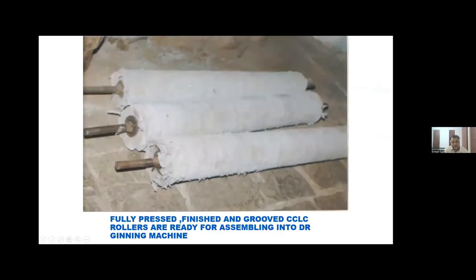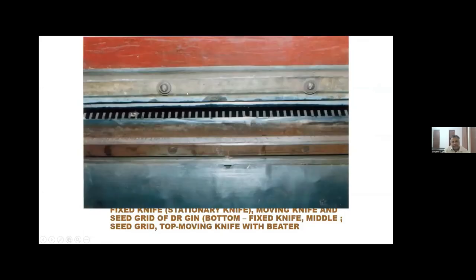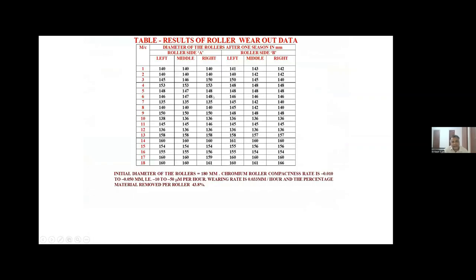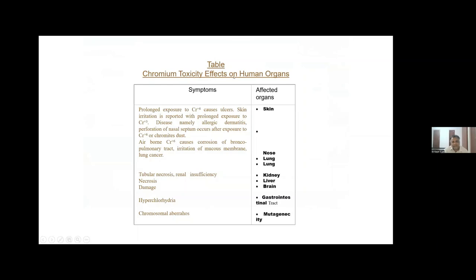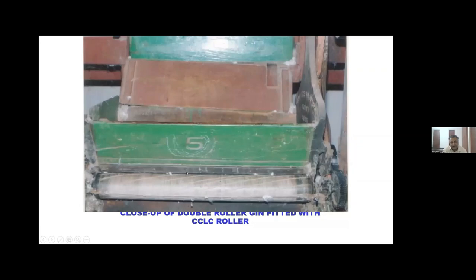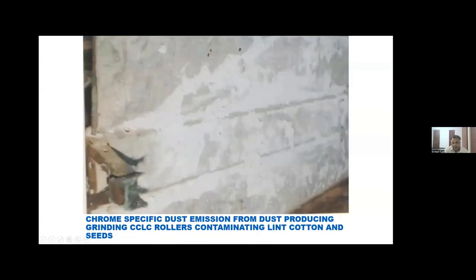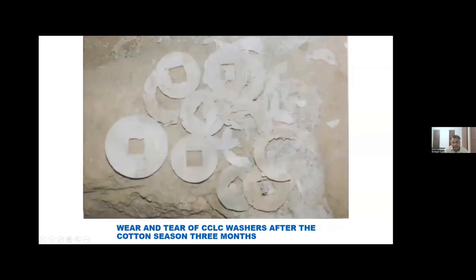These are shafts packed in washers — chrome composite leather crown rollers, the gin rollers used in Indian double roller ginning industries. The grooving done on them is called mode grooves, used to remove lint cotton via seed grid. Chromium toxic effects take place in this cotton roller ginning process in our country. USA and UK never use CCLC rollers — they use only eco-friendly rollers. This is the used washer in Indian cotton ginning industries, and this powder is chromium-specific dust — toxic chromium.